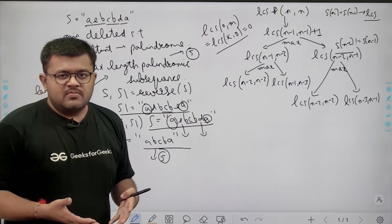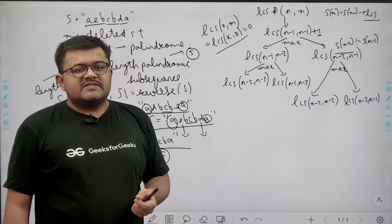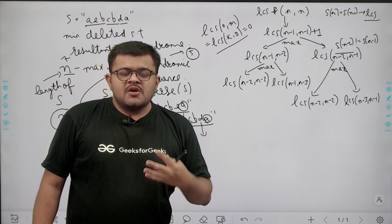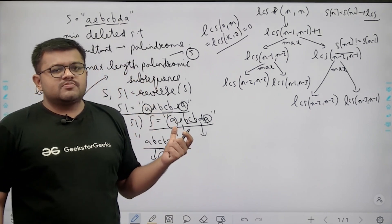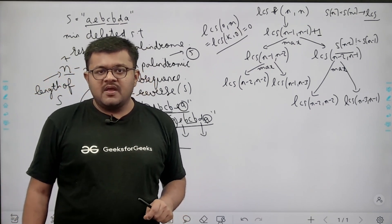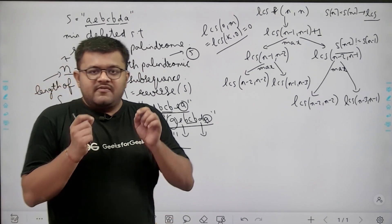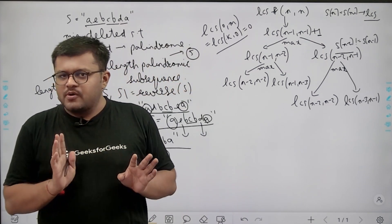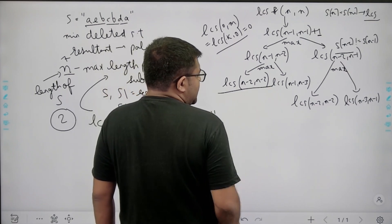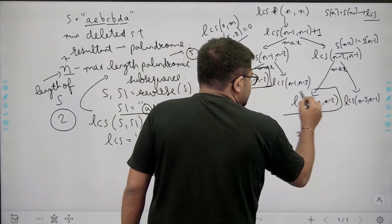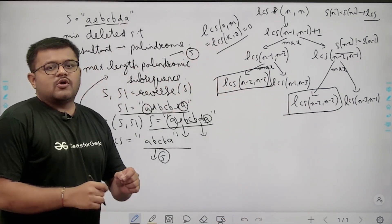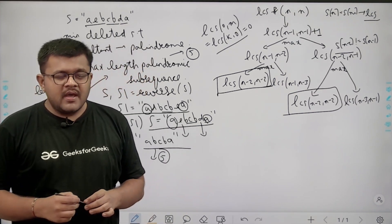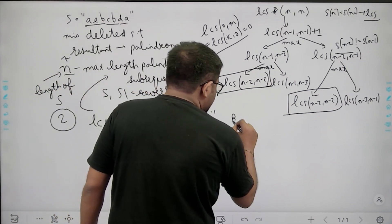We want to convert the exponential time complexity into polynomial. Can we think of dynamic programming? To use dynamic programming we need to check the overlapping subproblems property — whether the same smaller problems are solved again and again in the recursion. Here LCS(N-2, N-2) is called multiple times, so we have overlapping subproblems. Therefore, we can convert this into a dynamic programming problem. Let us use the bottom-up approach and fill a DP table.